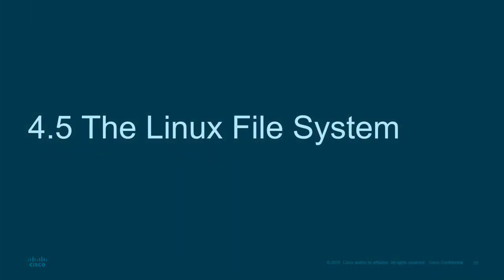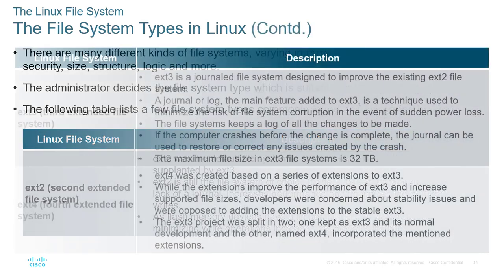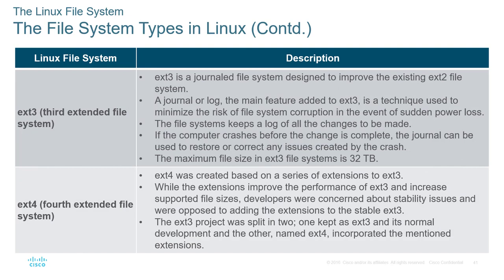Moving on to the Linux file system. There are multiple variations of file systems in Linux. The purpose is preparing the physical media for storage — speed, flexibility, security, size, structure, and logic are all based on the file system choice. Common ones are ext2 (second extended file system), ext3, and ext4. Modern versions of Linux use ext4 — the fourth generation — which has better performance, is more secure, and more stable. All of them journal and log everything, but ext4 is the most current and feature-rich.